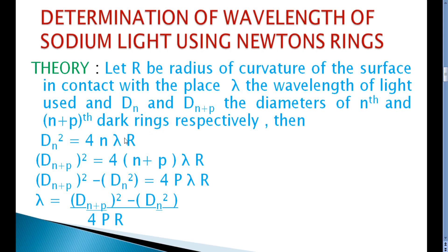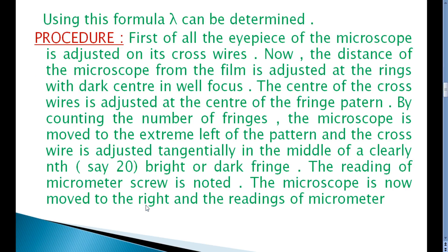The dark ring condition gives: D²ₙ is equal to 4n lambda R. Substituting for n and n+p, and subtracting the two equations, the 4n lambda R terms cancel, leaving 4p lambda R. Therefore: lambda is equal to (D²ₙ₊ₚ minus D²ₙ) divided by (4pR). Using this formula, lambda can be determined.